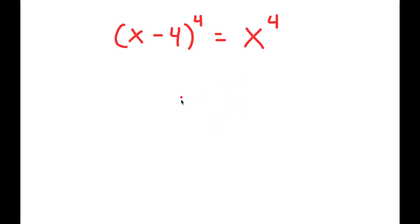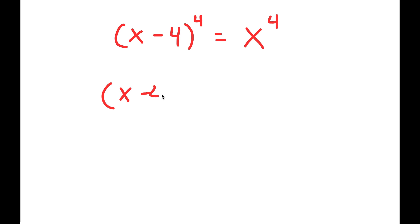So in this problem, I have x minus 4 to the power of 4 is equal to x to the power of 4. To solve this, I'm going to first start by rewriting this as x minus 4 to the power of 2 times 2 is equal to x to the power of 2 times 2.